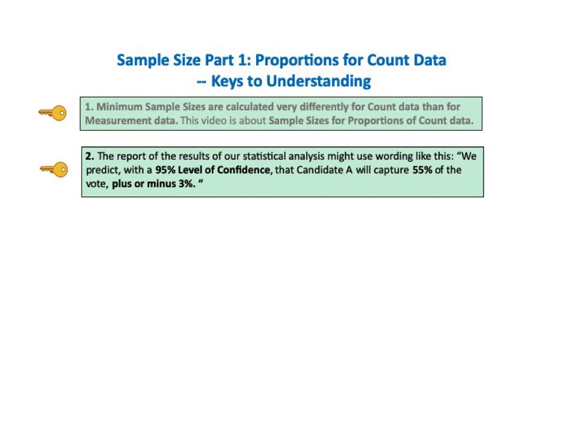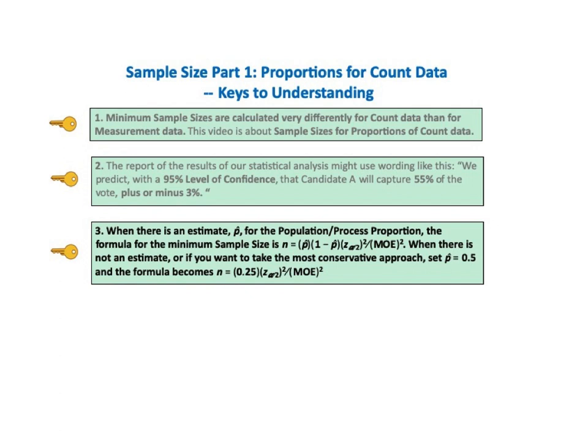KTU number 2 says the report of the results of our statistical analysis might use wording like this: We predict with a 95% level of confidence that candidate A will capture 55% of the vote, plus or minus 3%.